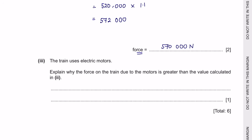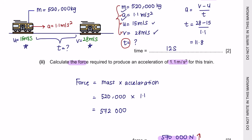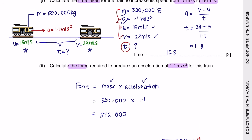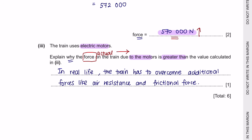Next, part 3. The train uses electric motors. Explain why the force on the train due to the motors is greater than the value calculated. When we calculated F = ma, we only found the net force needed for acceleration. In reality, there is air resistance acting in the opposite direction and large friction between the train wheels and the railway track, both of which resist motion and require a greater driving force.